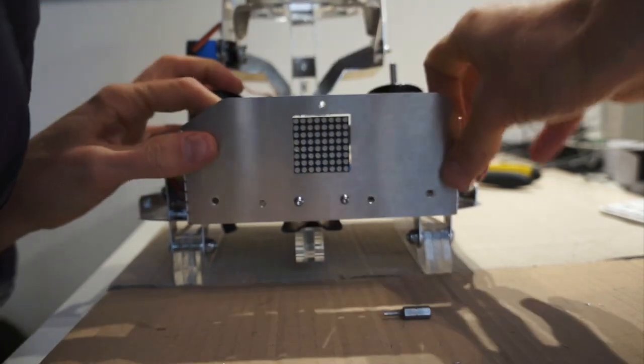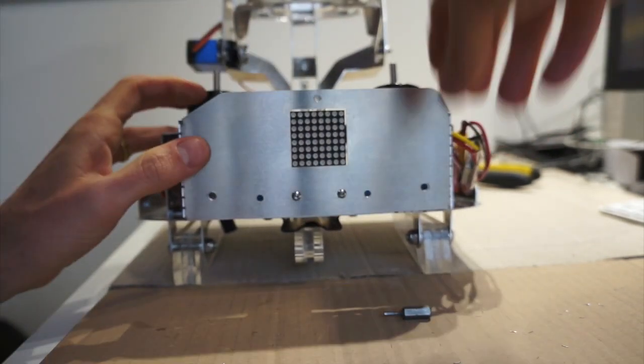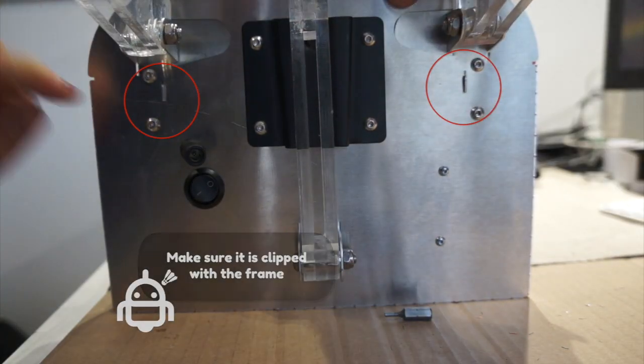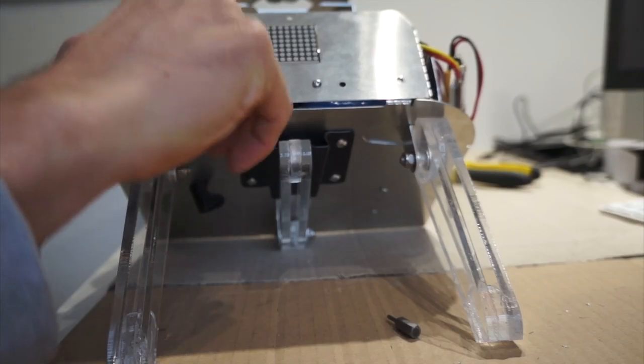The ESC should be maintained to the left so that you can insert the panel easily. Make sure it is clipped with the frame. Here you see. Alright.